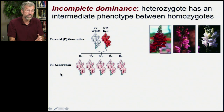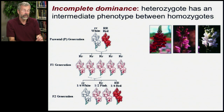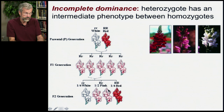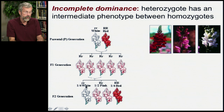Then, if we cross two of these heterozygotes, we'll get an F2 with three different phenotypes, because they have three different genotypes. We'll get red again — one in four will be red, one in four will be white, and the other half will all be pink.